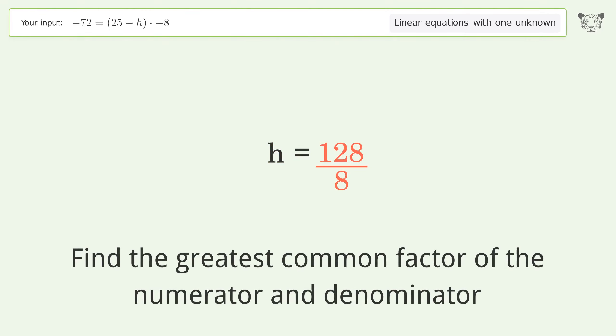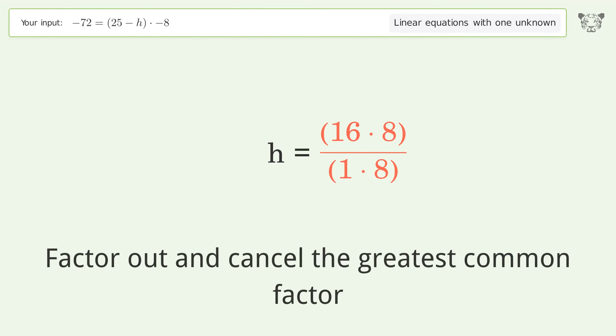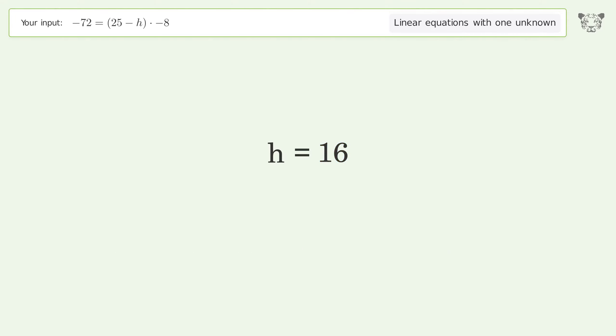Find the greatest common factor of the numerator and denominator. Factor out and cancel the greatest common factor. And so the final result is h equals 16.